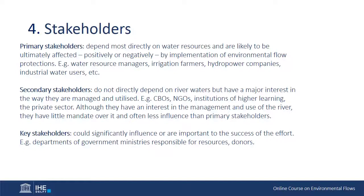Stakeholders. It is very important to identify all stakeholders with an interest in the e-flows process, or others who can actually influence the process. Looking into what the stakeholders' interests, expectations and influence on the programs are is very much needed. Primary stakeholders are the people who depend directly on the resource or are in charge of managing it. Secondary stakeholders do not necessarily depend on the resource directly but have a high interest and possibly influence on the process.